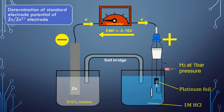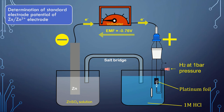The flow of current indicates that oxidation takes place at the zinc electrode. Since the flow of current is always opposite to the flow of electrons, and the current flows towards the zinc electrode, electrons are flowing away from it — confirming that oxidation has taken place. It is important to note that all electrode potential values are expressed as reduction potentials. Since the reduction half reaction is the reverse of the oxidation half reaction, we obtain the reduction potential by simply changing the sign. That is why the standard electrode potential of zinc is −0.76 V.